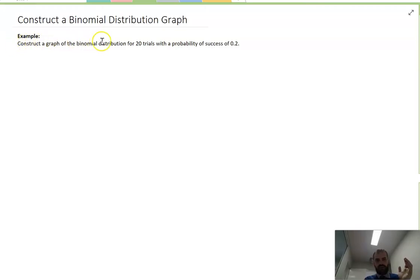I'm going to construct a graph of the binomial distribution for 20 trials with a probability of success of 0.2. So I'm going to get out some graph paper and a ruler and I'm going to get to work.